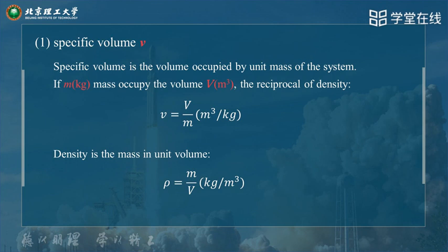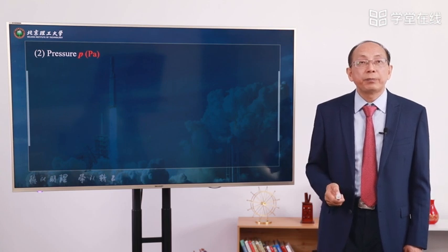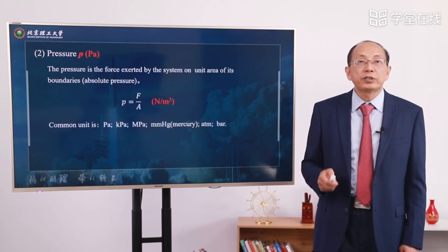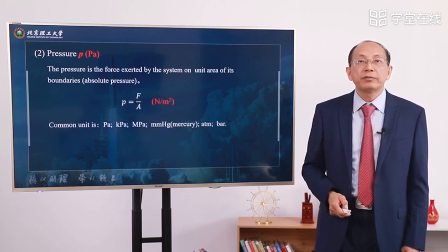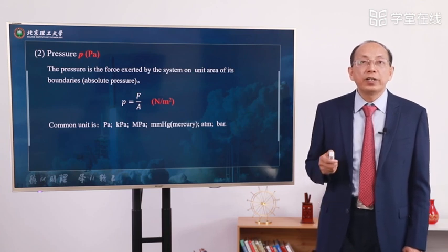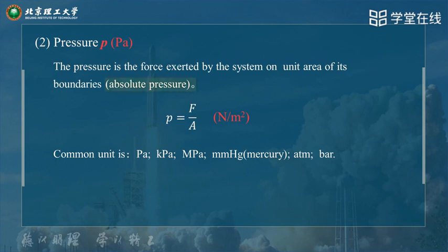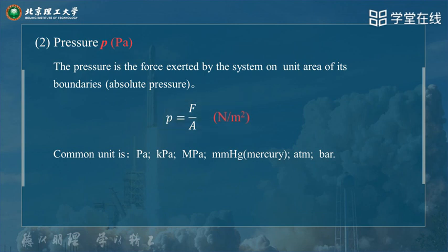Another very important concept is density. Density is the mass in the unit volume. So V and rho are very similar. Another state parameter is P, pressure. Pressure is the force exerted by the system on unit area of its boundary. So here the pressure is absolute pressure. P equals F over A, and its unit is N divided by square meters, where N is Newton.